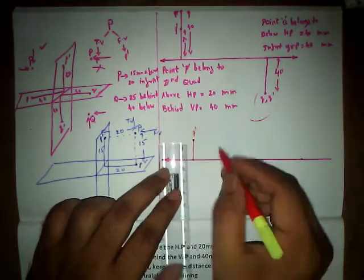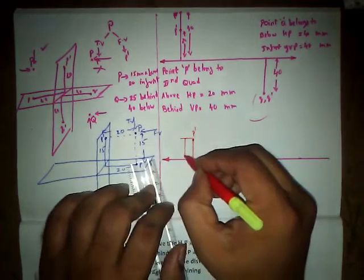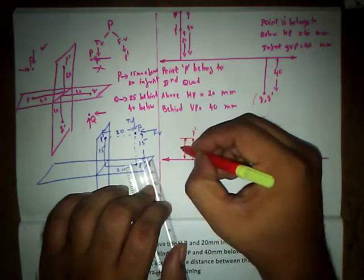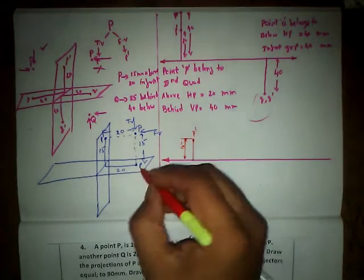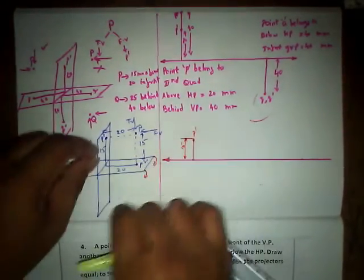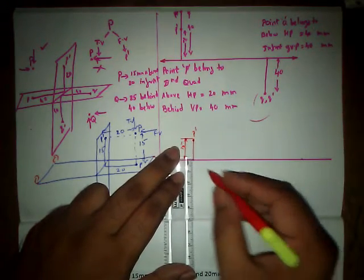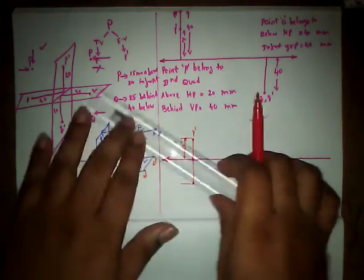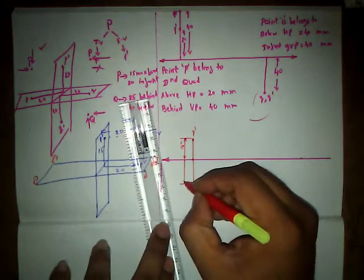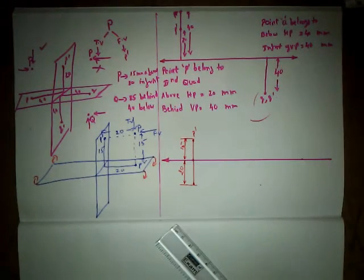We have P' at a distance of 15mm. The top view is on the horizontal plane; on rotating the horizontal plane clockwise, this part moves downwards, so p moves downward at a distance of 20mm from the XY reference line. So from the XY reference line the distance is 20mm — this is the required point.